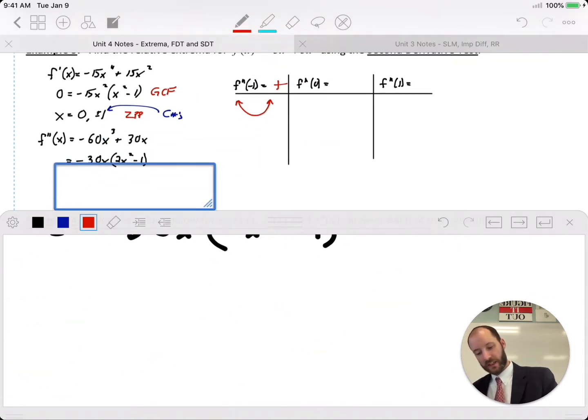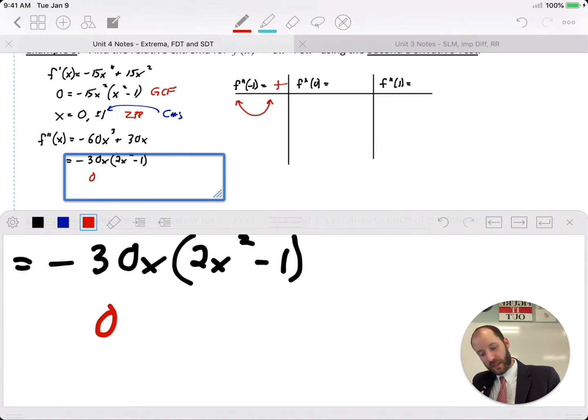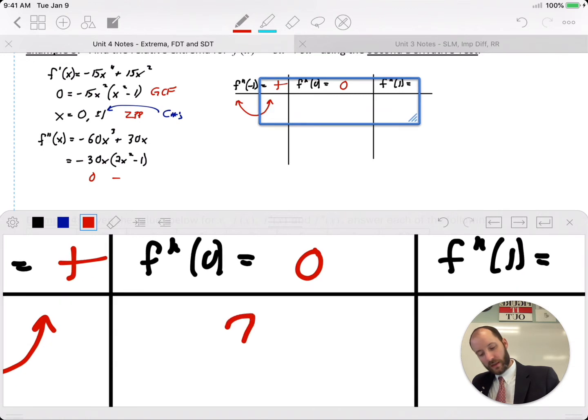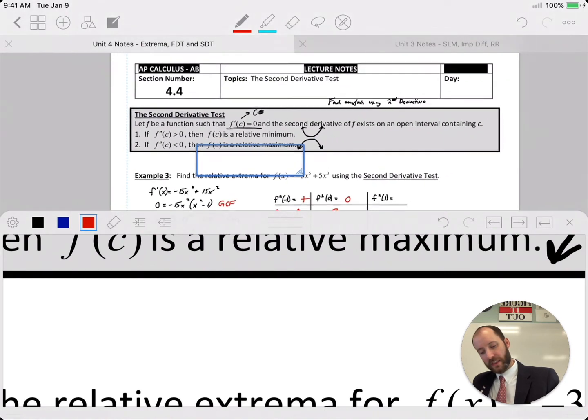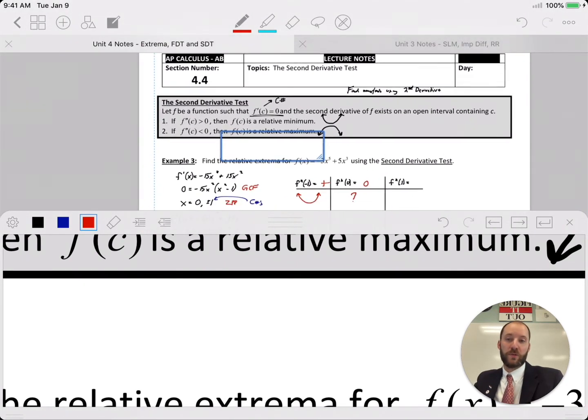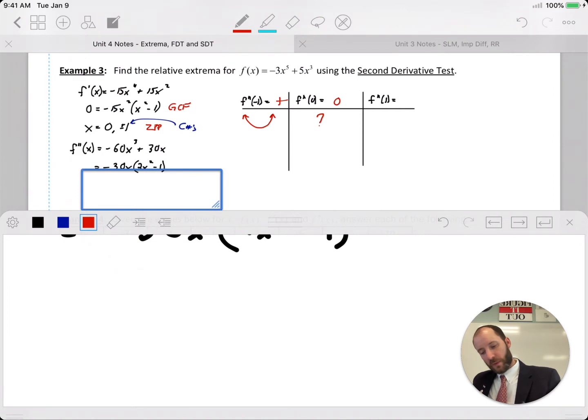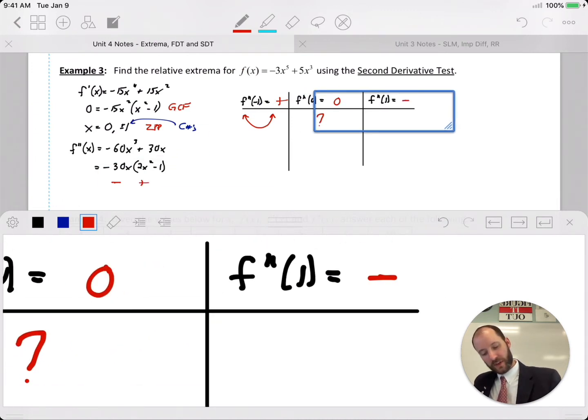Now plug in zero: negative thirty x times zero is zero, which overall is going to be zero. Don't really have classification with that based upon the second derivative, it's only for positive or negative second derivative, not for zero. Now plugging in positive one: positive one, negative, positive times positive equals negative, so concave down behavior.